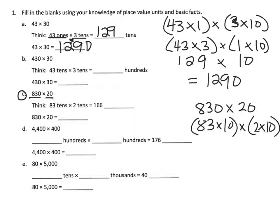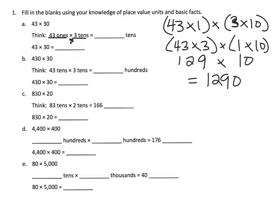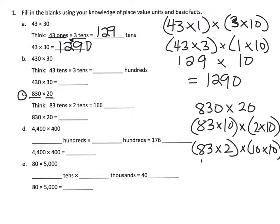We can use our associative and our commutative properties to get that this is equal to 83 times 2 times 10 times 10. So 83 times 2, well 83 times 2 is 166 times.